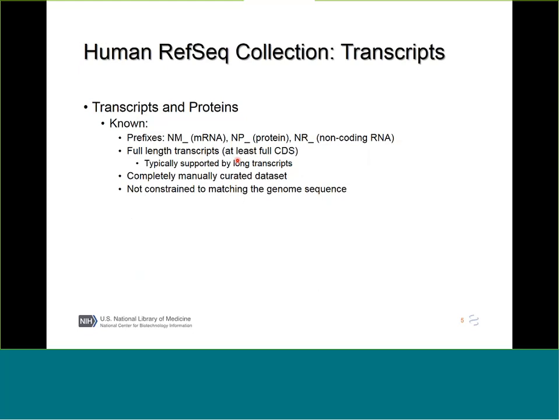We are only annotating full-length transcripts — at least full-length CDS, and preferably also UTRs. They're typically supported by long INSDC or PacBio type sequencing representing that we think we fully understand that this RNA exists in the cell. We are loosening this up a little bit in cases where genes are more complex and we need to do a bit more interpretation of the available data. The known set for human is completely manually curated. Also note that the known transcripts are not constrained to match the genome sequence.